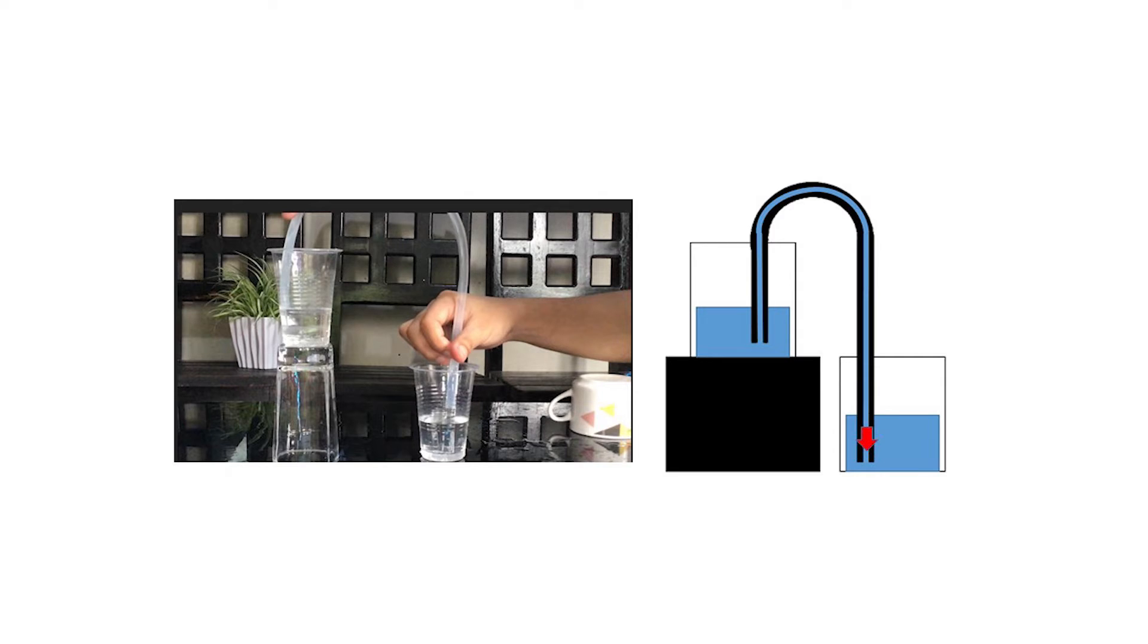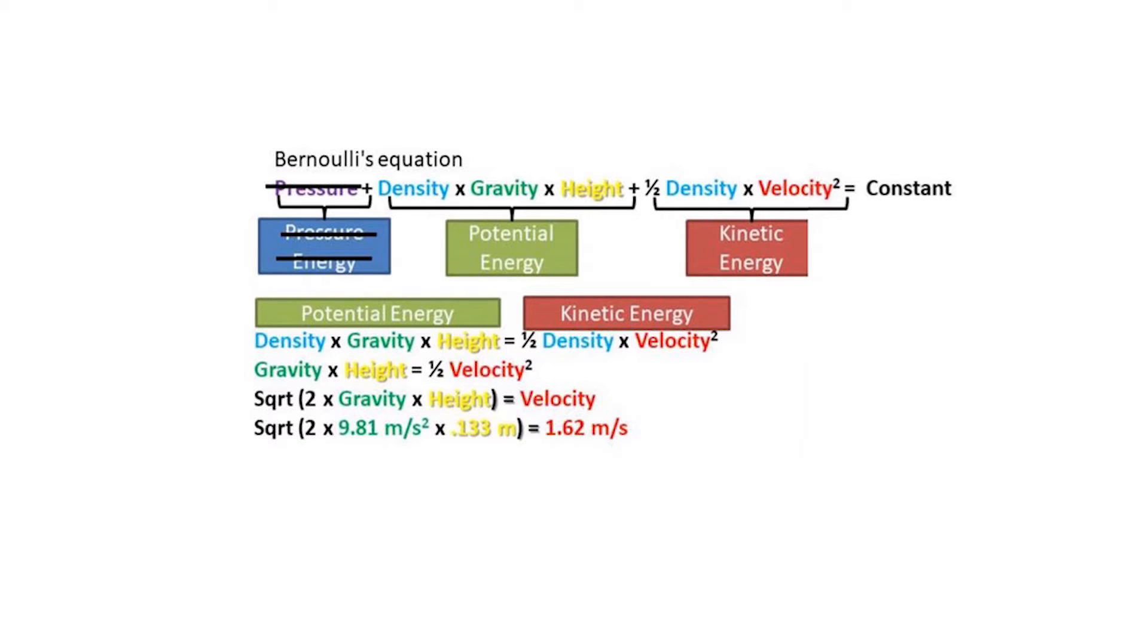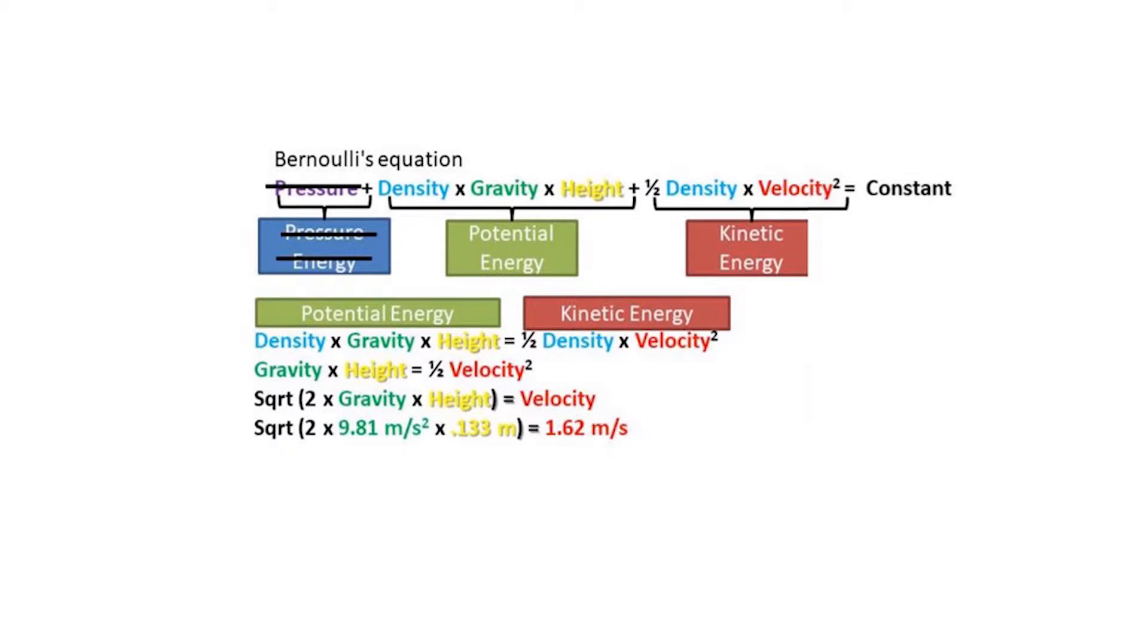This also causes the lower elevation to have greater velocity. As the siphon follows the principles of Bernoulli's theorem, it is likely noted that the velocity, when observed, changes as height changes. The setup where the elevation is the same height as the empty container showed the greatest velocity. When decreasing the height of the elevation, it also decreases the velocity of the water exiting the tube.